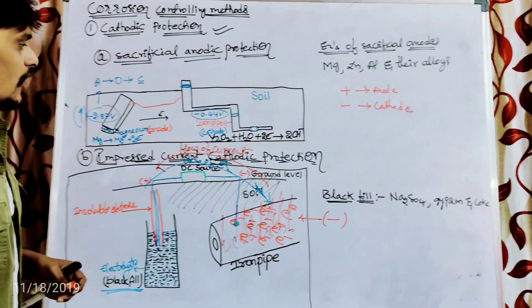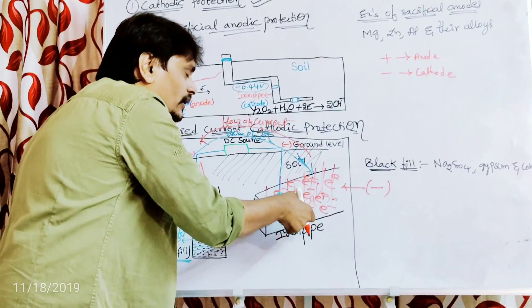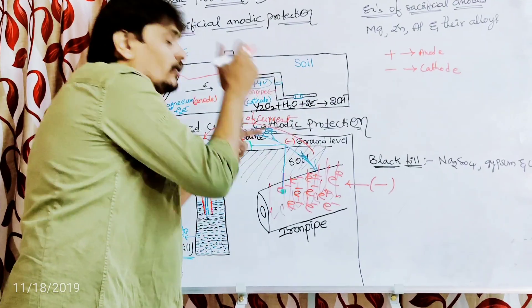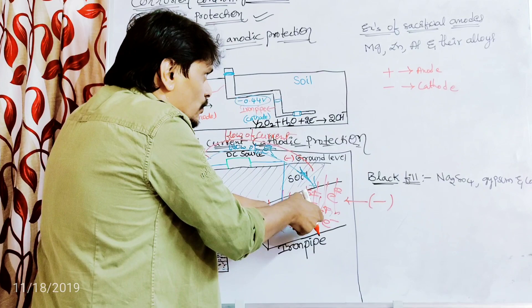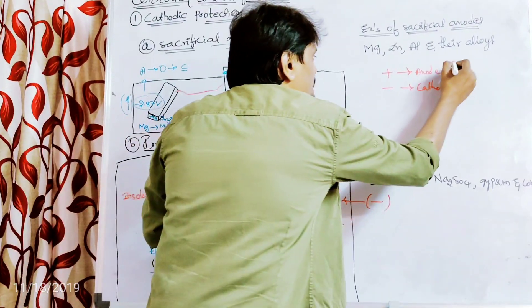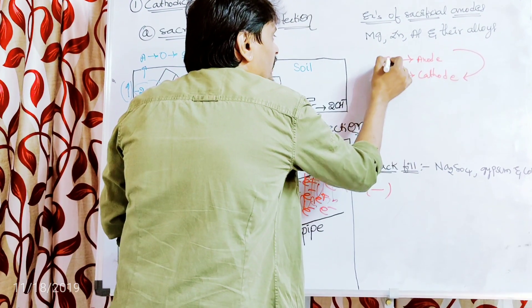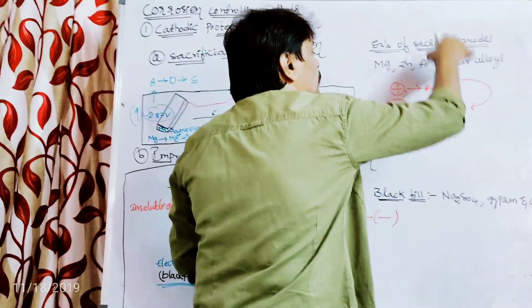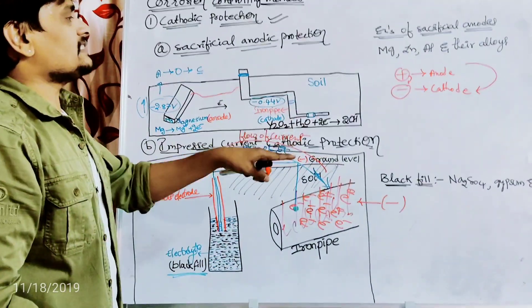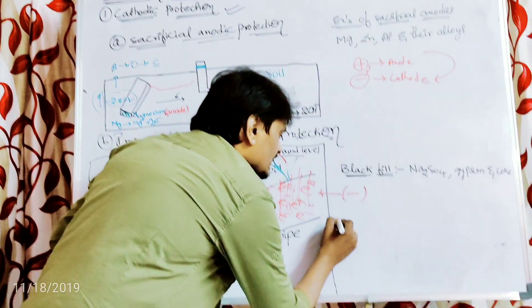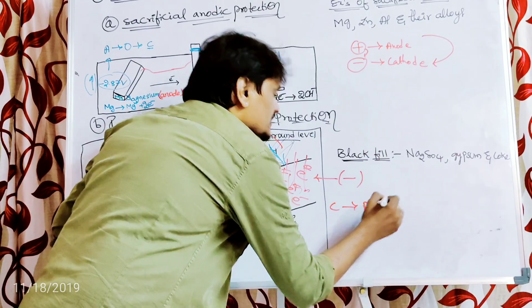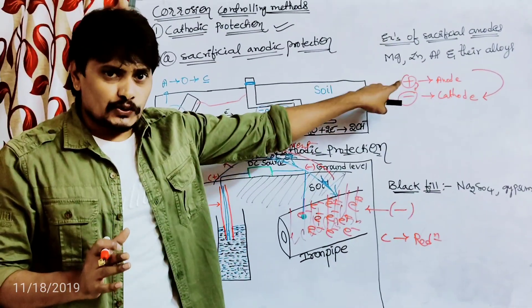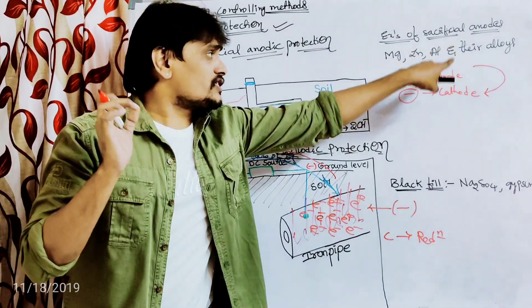Whenever the iron pipeline acts as an anode — meaning it is positive — it undergoes oxidation, which is corrosion. But this anode, which was previously positive, has now been converted to negative by the flow of electrons. That is, it has been converted from anode to cathode. Now, instead of acting as an anode and undergoing oxidation (corrosion), it acts as a cathode and undergoes reduction.